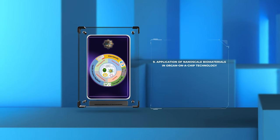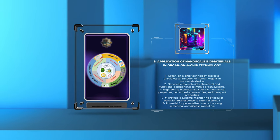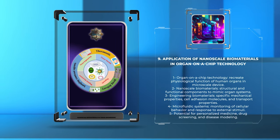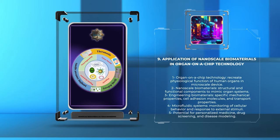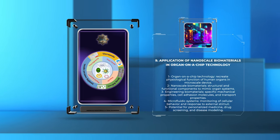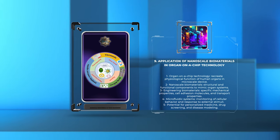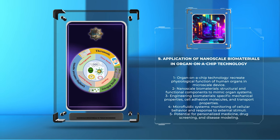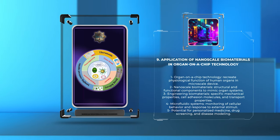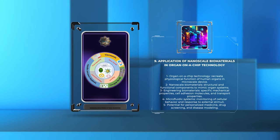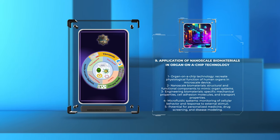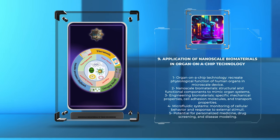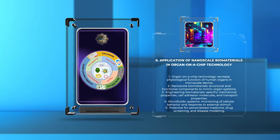Organ-on-a-chip technology represents a cutting-edge approach in tissue engineering, aiming to recreate the physiological function of human organs in a microscale device. Nanoscale biomaterials play a crucial role in this technology, providing the structural and functional components necessary to mimic organ systems. By engineering biomaterials with specific mechanical properties, cell adhesion molecules, and transport properties, we can recreate the intricate architecture and functionality of various organs, such as the heart, liver, lung, or kidney. The incorporation of nanoscale sensors and microfluidic systems further enables the monitoring of cellular behavior in response to external stimuli. Organ-on-a-chip platforms utilizing nanoscale biomaterials offer the potential for personalized medicine, drug screening, and disease modeling, revolutionizing the field of biomedical research.